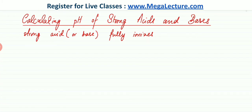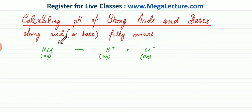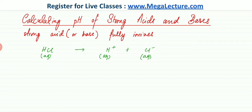If you take a strong acid like HCl, the HCl molecule, when mixed with water, will completely break down into two ions: H⁺ and Cl⁻. So if you have a thousand molecules, all of them are going to ionize and dissociate into H⁺ and Cl⁻ ions.